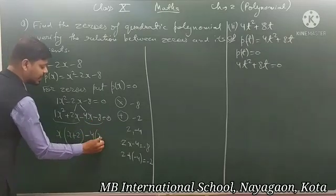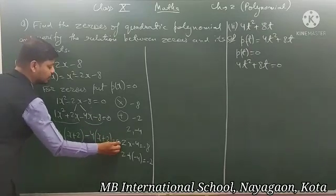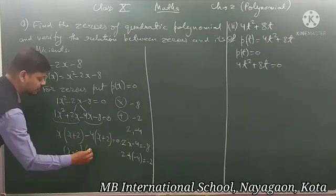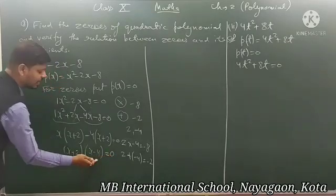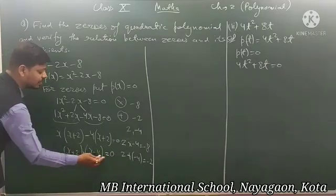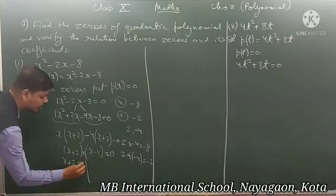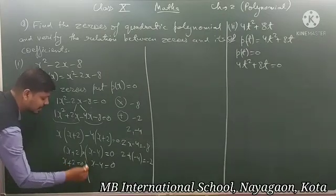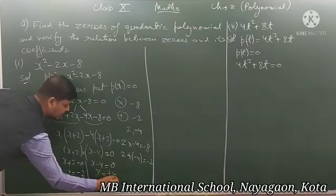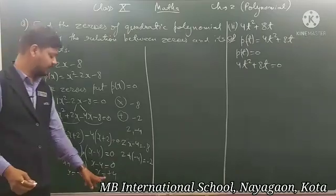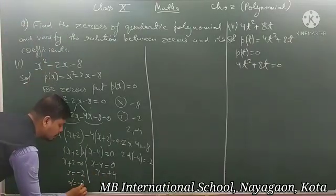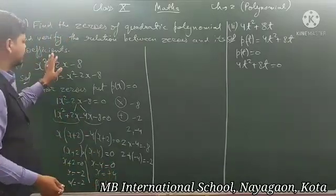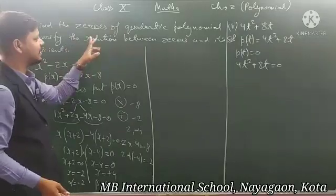Now (x + 2) is common in both terms. Taking (x + 2) common: (x + 2)(x - 4) = 0. Since their product is 0, either x + 2 = 0 giving x = -2, or x - 4 = 0 giving x = 4. So the zeros are α = -2 and β = 4. These are the two zeros of the quadratic polynomial.